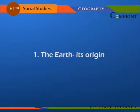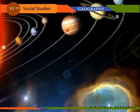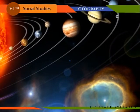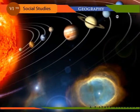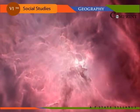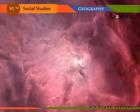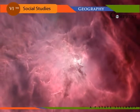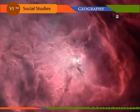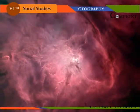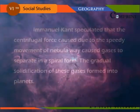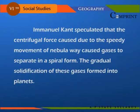The Earth — Its Origin. The Earth is one of the eight planets of the solar system. These eight planets originated from the sun. Initially, the cool still gases and dust particles gradually collided with each other. This collision caused heat, and as it started spinning it formed into a hot gaseous cloud by gravitational attraction. Immanuel Kant speculated that the centrifugal force caused by the speedy movement of the nebula caused gases to separate in a spiral form. The gradual solidification of these gases formed into planets.